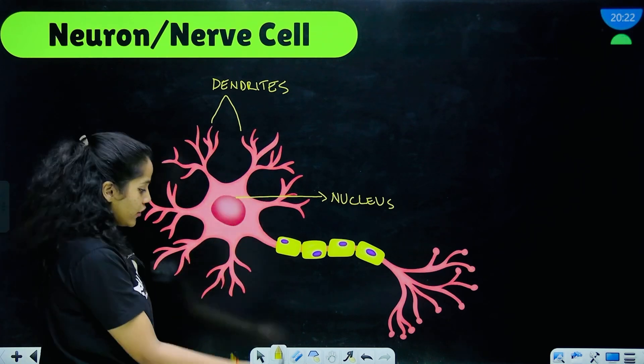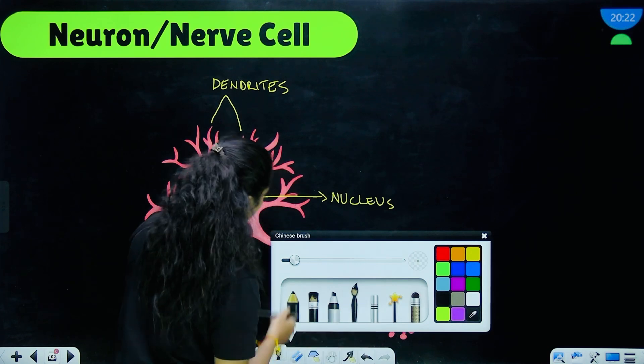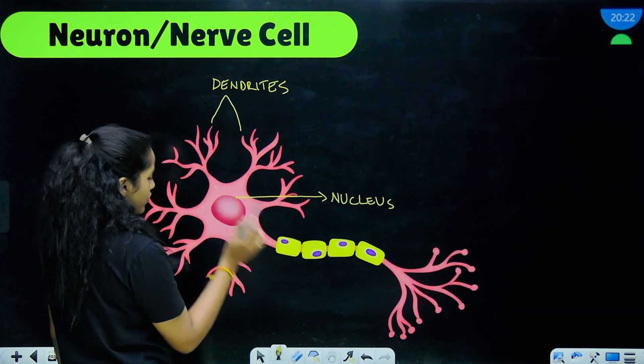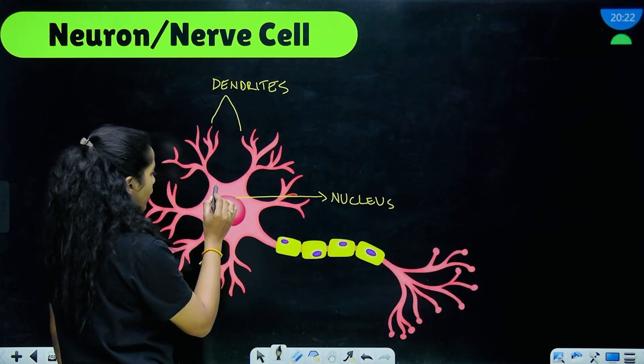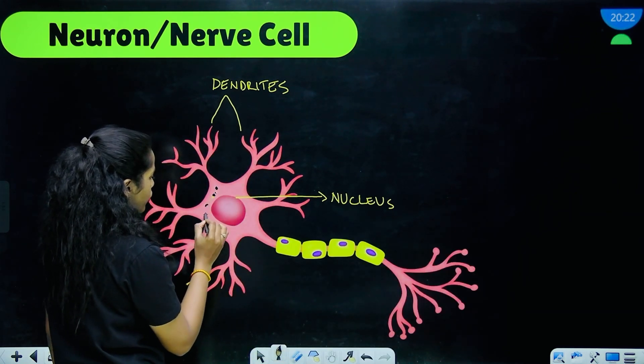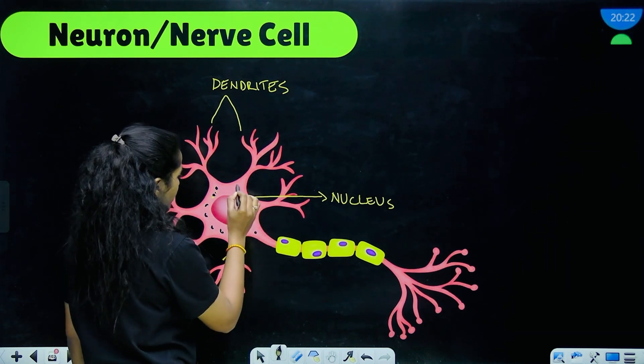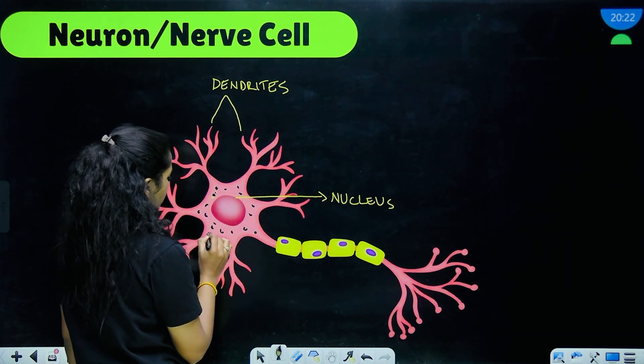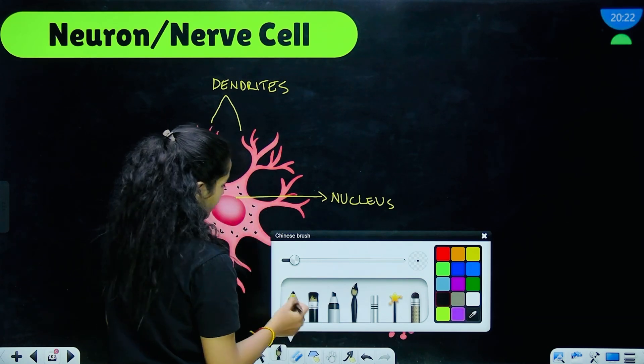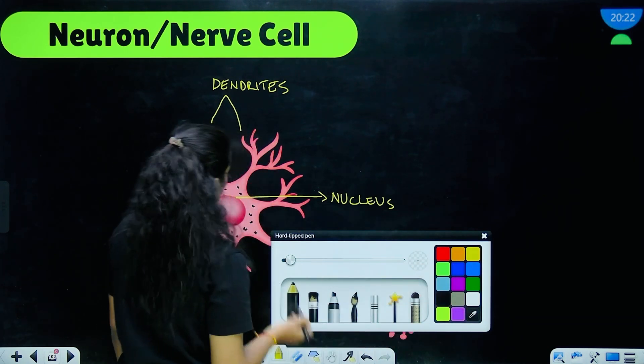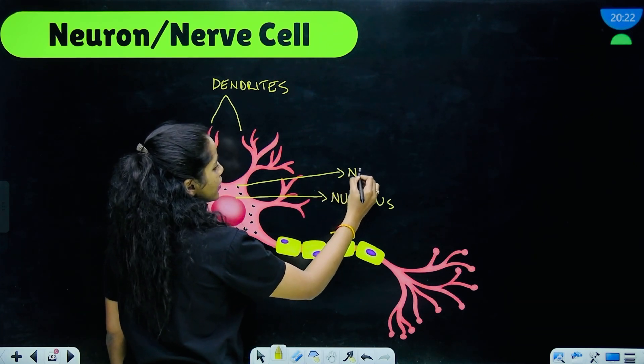The nucleus—and guys, like around the nucleus you have these dots over here. Around the nucleus they are actually granules and they are called the Nissl granules.